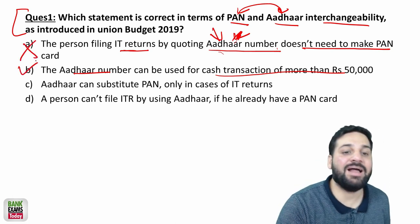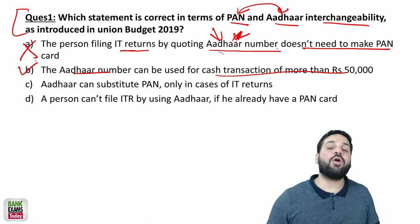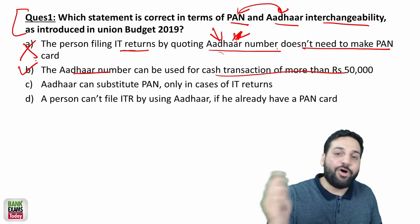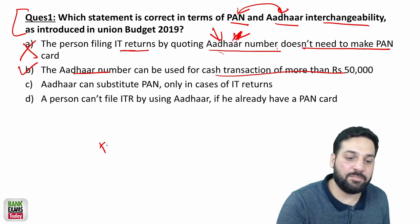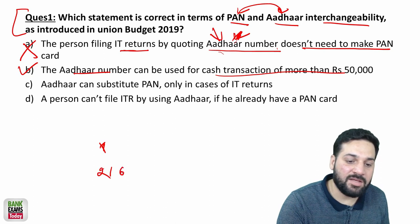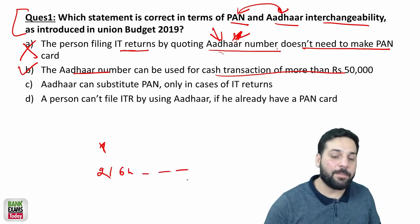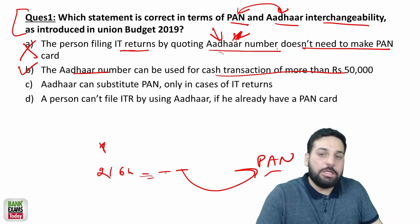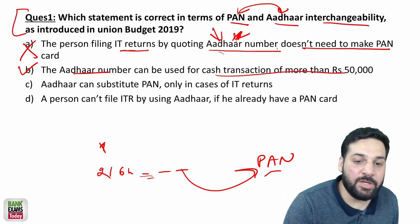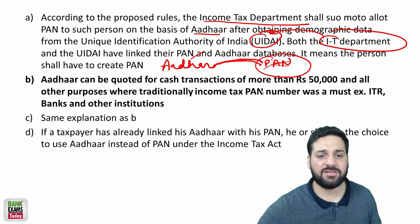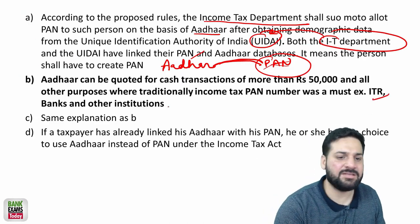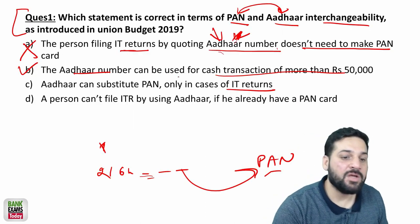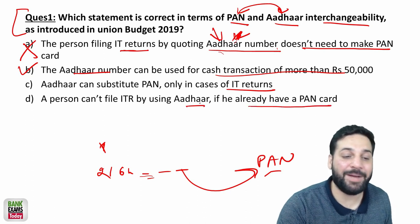The Aadhaar number can be used for cash transactions of more than 50,000 — that is correct. Up till now you needed to show the PAN card, but now if you show your Aadhaar card, the bank will get all the details including your PAN number, as the data is linked. The statement that Aadhaar can substitute only in case of IT returns is false — you can use it in income tax returns, banks, and other institutions wherever PAN was previously required. A person cannot file ITR using Aadhaar if they already have a PAN card — that is also false.